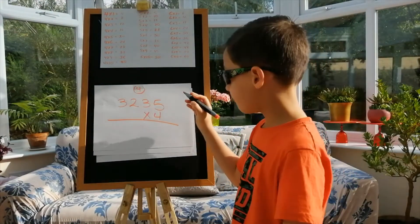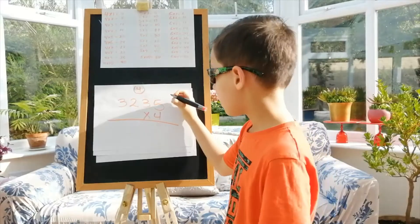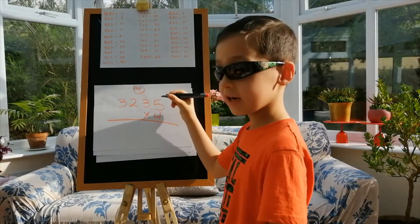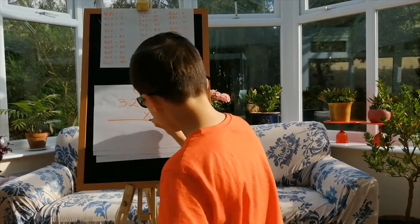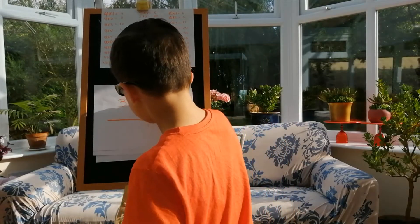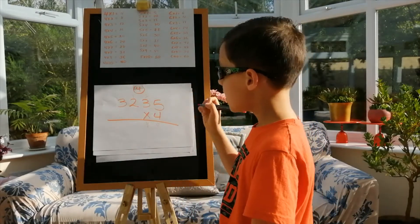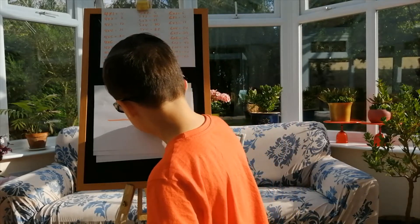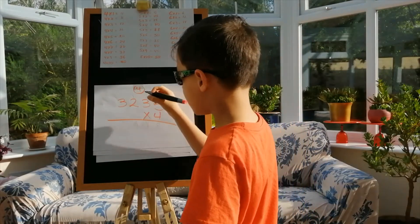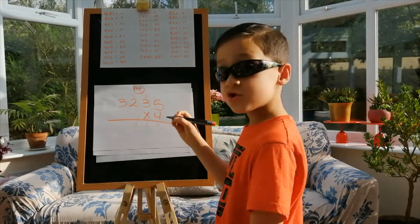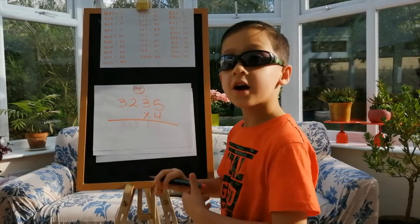4 times 5 is 20. 4 times 3 is 12, with the 2, so it's 14. And then it's 4 times 2, that is 8 with the 1, so it's 9. And 4 times 3 is 12. 12, and now I'm going to do the 5.